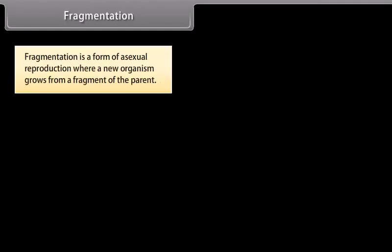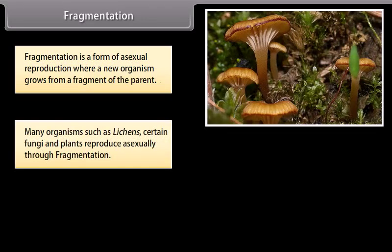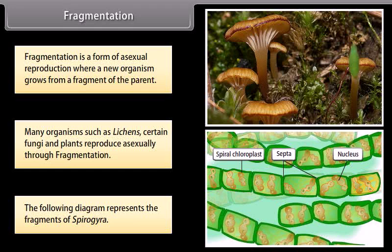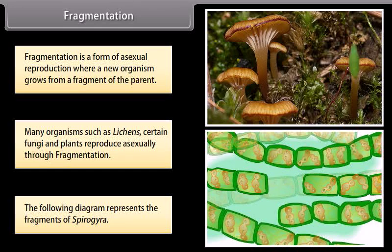Fragmentation is a form of asexual reproduction where a new organism grows from a fragment of the parent. Many organisms such as lichens, certain fungi, and plants reproduce asexually through fragmentation. The following diagram represents the fragments of Spirogyra.